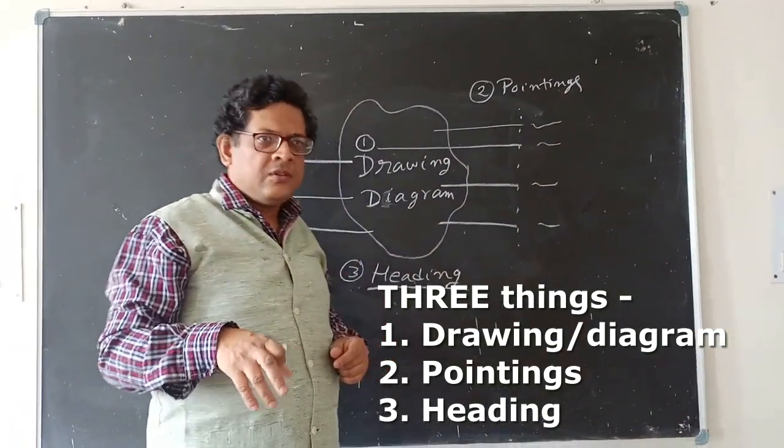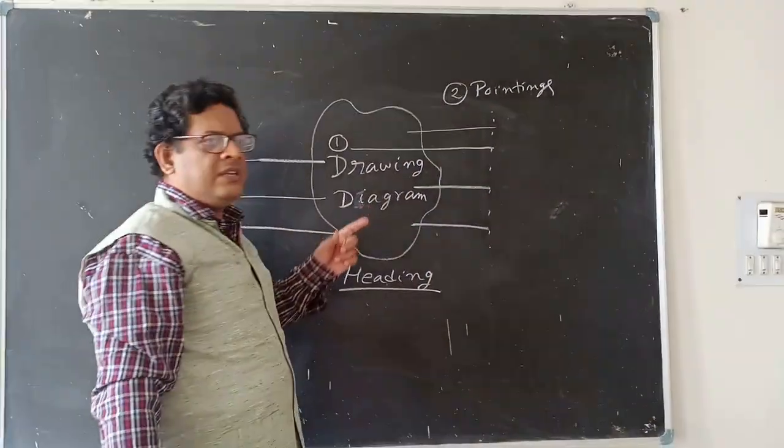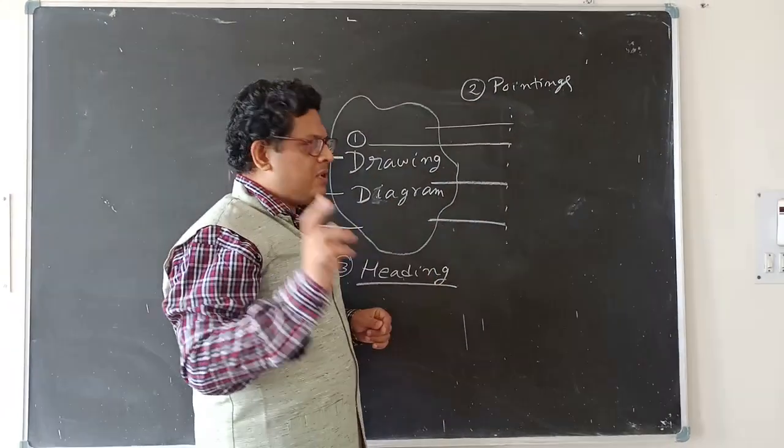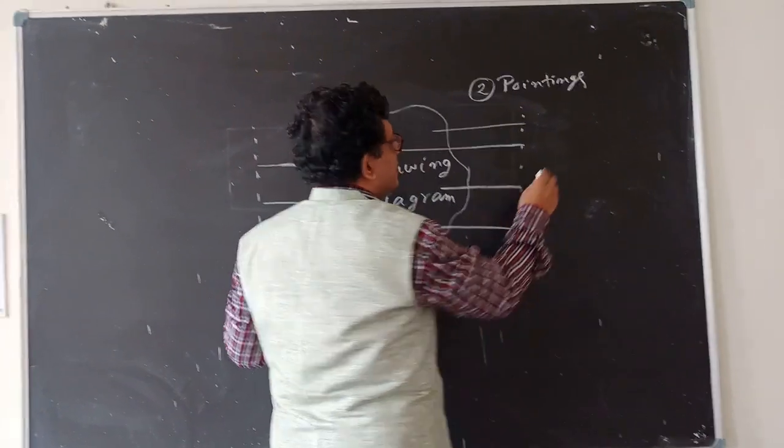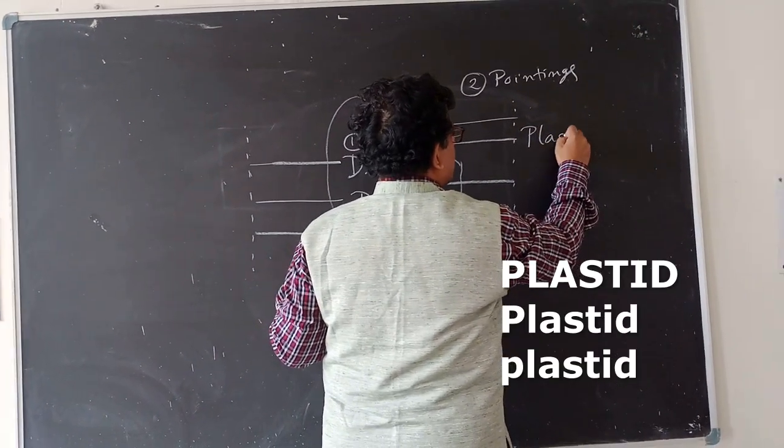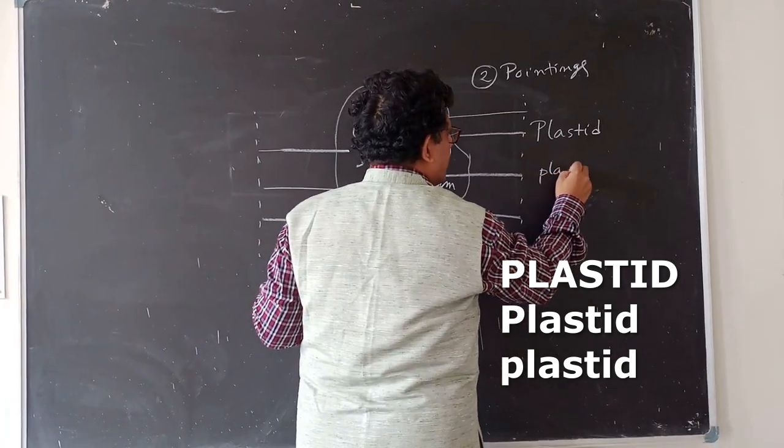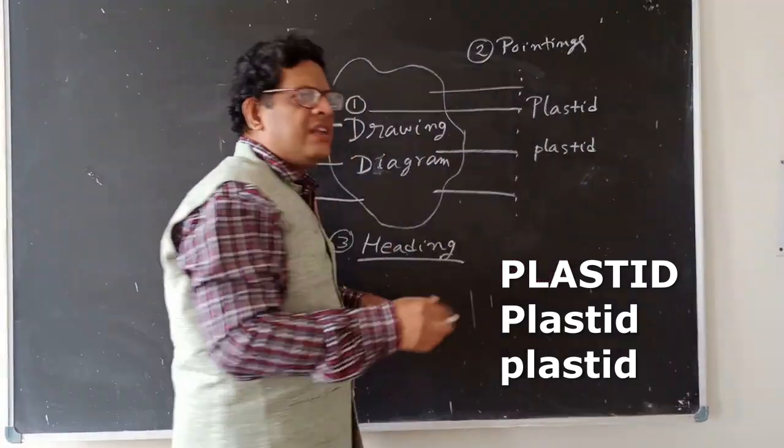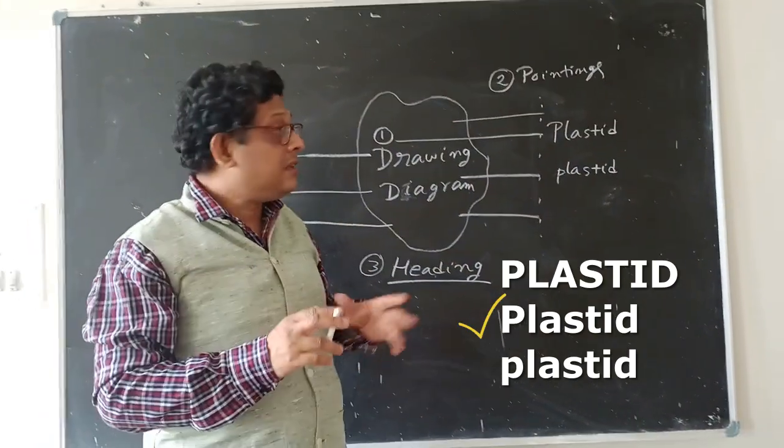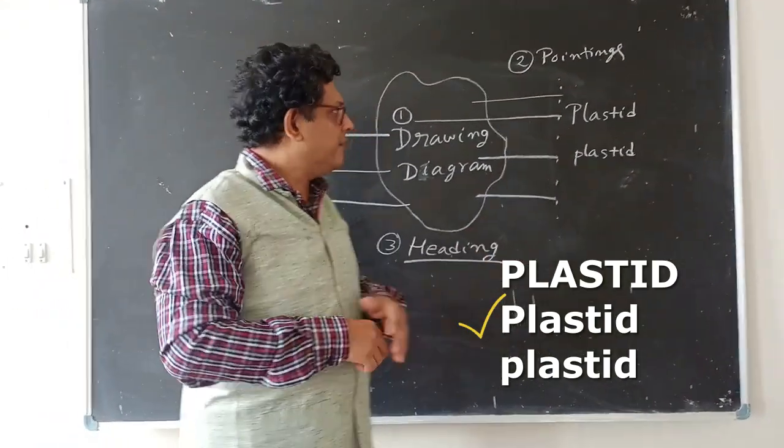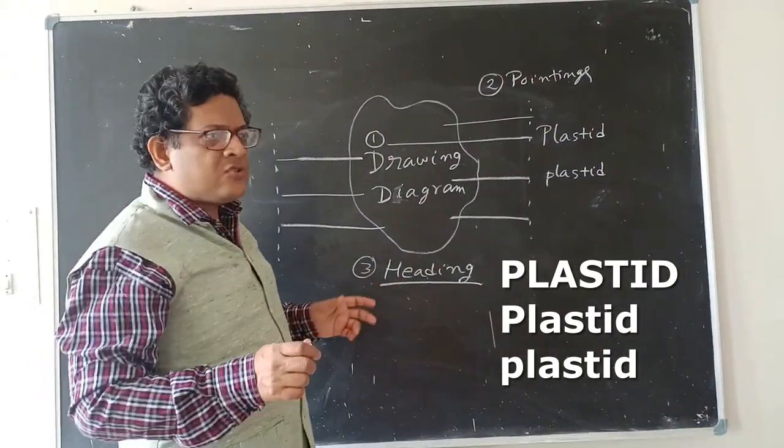Now there are several questions. Should I write pointings in all capitals? I prefer you should not write the pointings in capital letters. You may write it two ways. Suppose I am pointing out, say, plastid. I can write in this way: Plastid, or I can write all small. No problem. Whichever you prefer, you can start with a capital letter or you can write small.